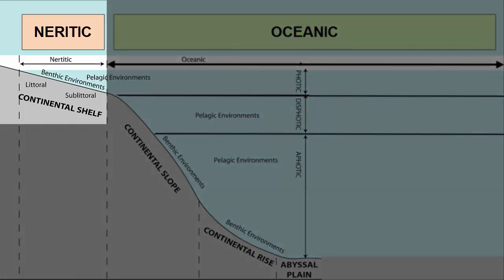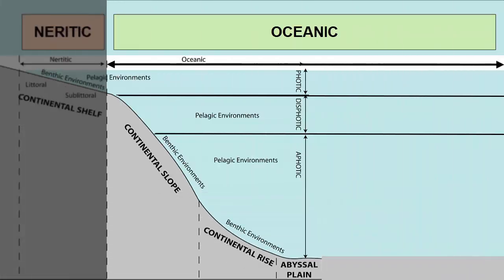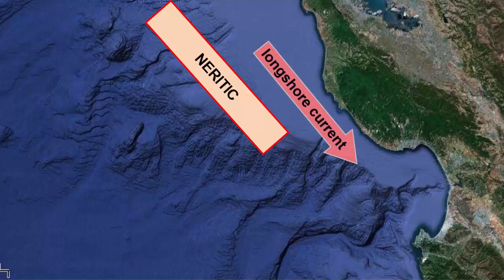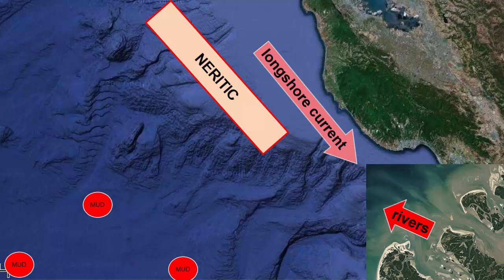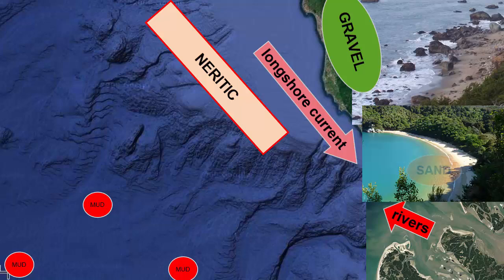The two zones are neritic, over the continental shelf, and oceanic, over the slope, rise, abyssal plains, mid-ocean ridges, and trenches. Neritic waters tend to have faster moving currents interacting with surface waters and the shallow bottom. These waters can pick up and shift around larger sediment grains. Rivers that enter here retain mud-sized sediments in suspension and can carry them quite a distance offshore. Gravels tend to stick close to shore. Fine sands collect in medium-energy coves and can be carried out to the edge of the shelf.